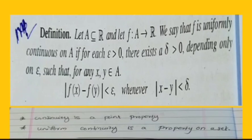A function from A to R is uniformly continuous. It is not a point. Epsilon greater than 0 depends only on epsilon.